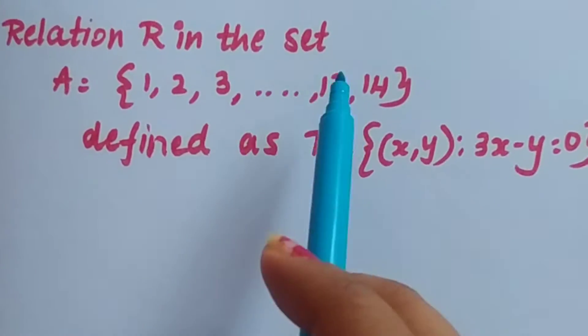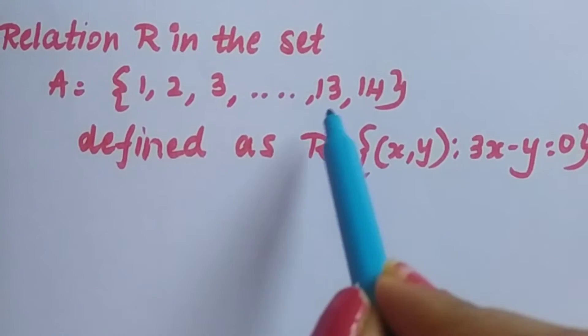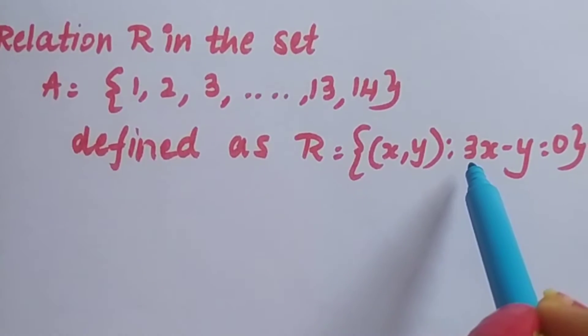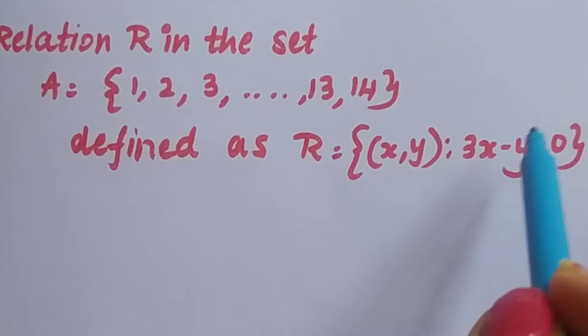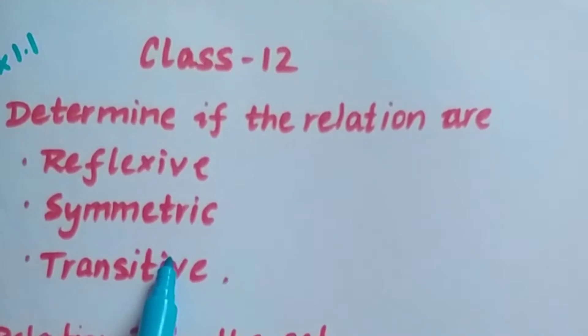Here they have given the set A which has elements 1 to 14, and they have given the set R where x, y and 3x minus y is equal to 0. So we have to prove if it is reflexive, symmetric and transitive.